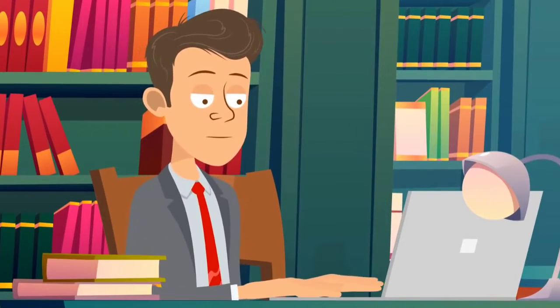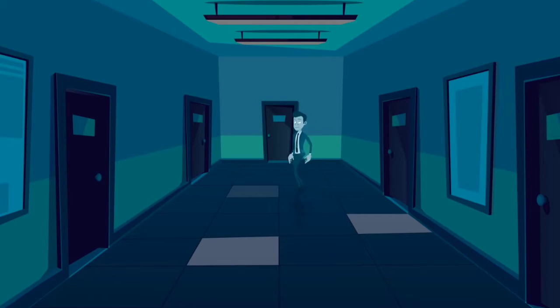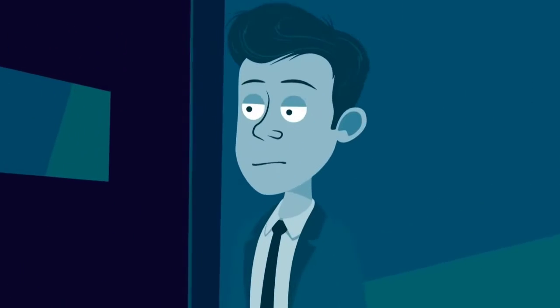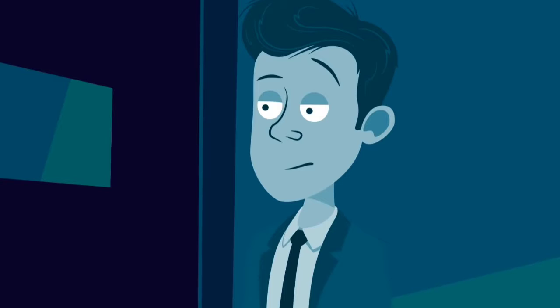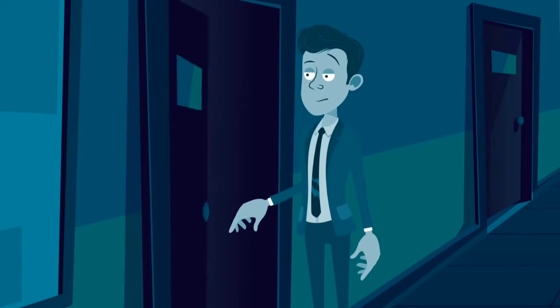Paul stayed late at the library. When he finished studying, he headed home. As he was walking down the dark hallway, he heard a voice coming from the men's locker room. Paul noticed that someone had locked the door from the outside. Paul opened it and saw Tom.